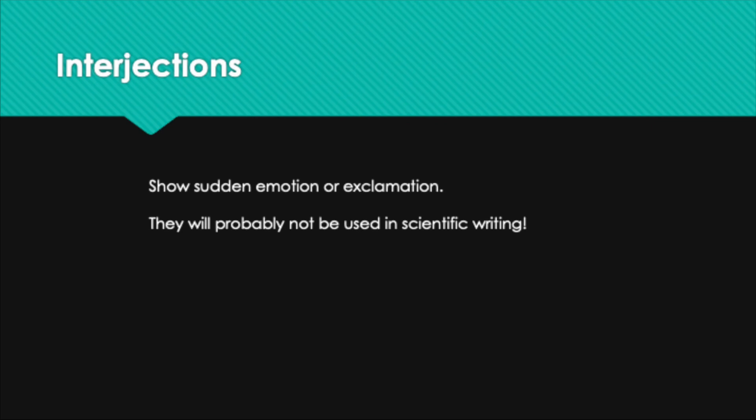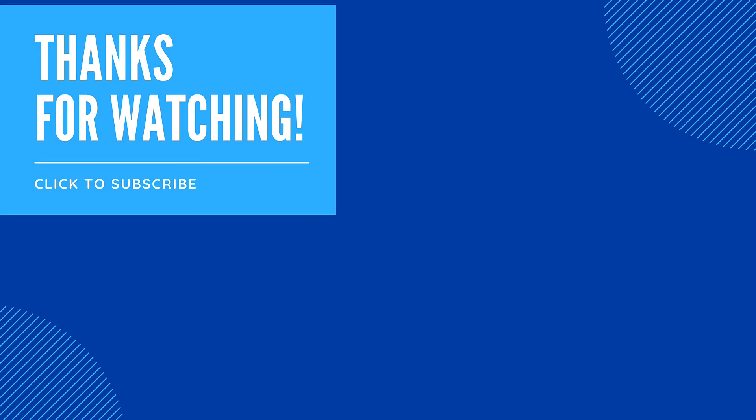The last part of speech is the interjection, which shows sudden emotion or exclamation. Interjections will probably not be used in scientific writing. We have now covered the eight parts of speech. Understanding how all of those parts function together in a sentence — to provide information to the reader and structure a sentence coherently — is more important than remembering the names. Look for examples on your own in the scientific papers you are reading or even in sentences you have written yourself.